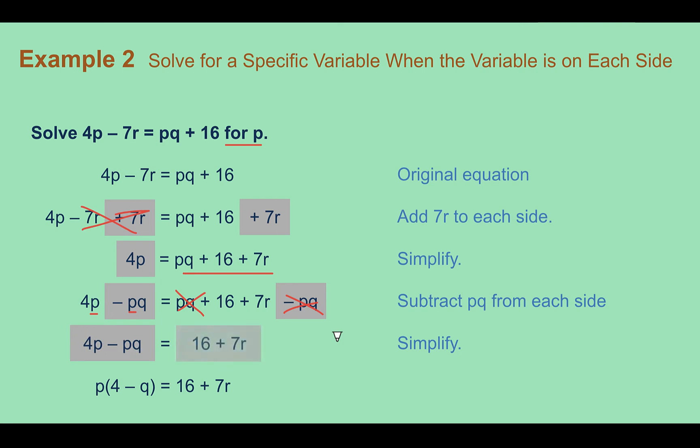Now I'm almost done. If you have the variable you want in more than one term, you can factor out that variable out front using the distributive property. So here I could factor out or divide both of these by p, and if I factor that out then I'd be left with 4 minus q. So notice I'm working to get that p closer and closer to being on its own. It is now by itself outside the parentheses once I factored it out.